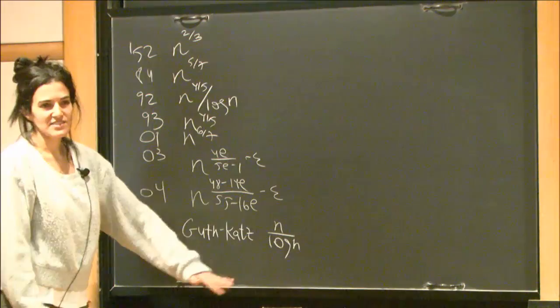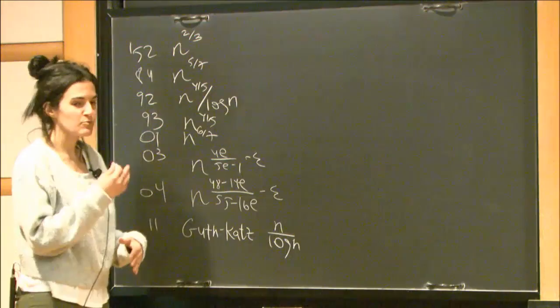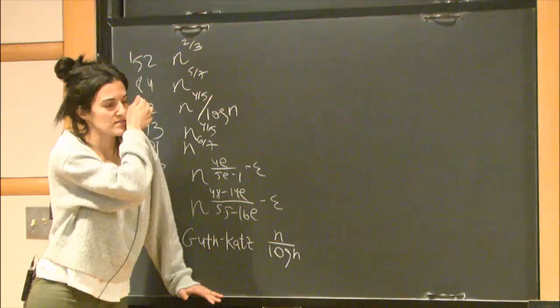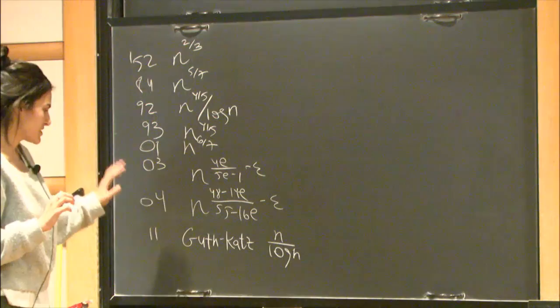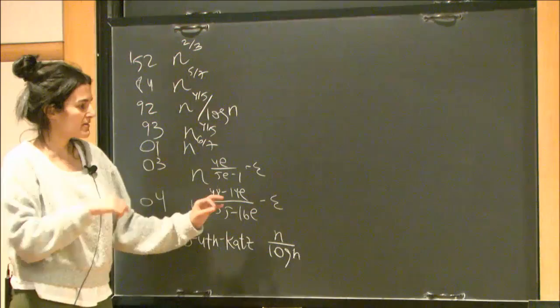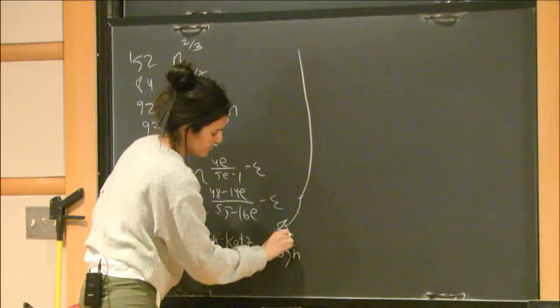The Guth-Katz result was considered a huge progress and surprise. In their paper, they developed many tools that later affected the whole field of combinatorial geometric questions. To understand what led to this result, it helps to look at what happened before it.